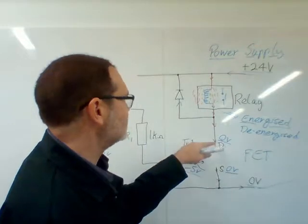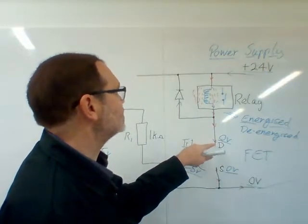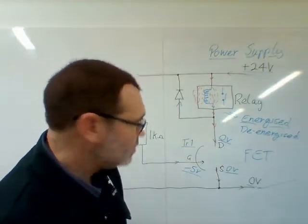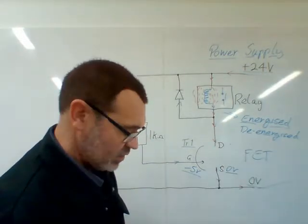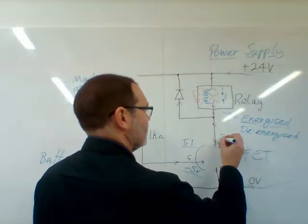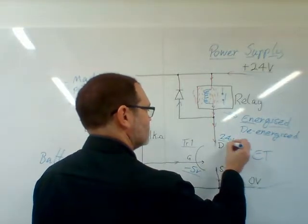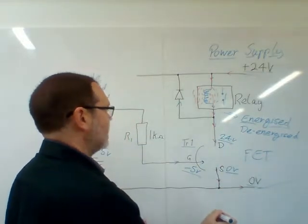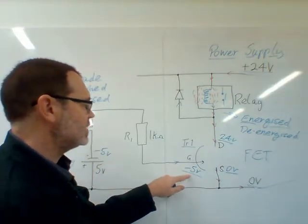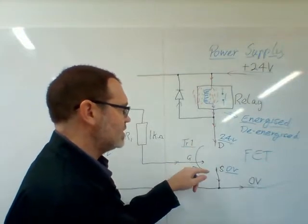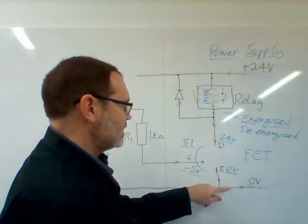However, my drain is now connected directly to 24 volts and it's not going anywhere. There's no current flowing, but the pressure will still be there, so this will now rise up to the full supply rail of 24 volts. So I now have 24 volts on the drain.